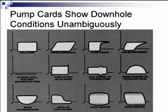If you see a rectangular-looking card, that says the anchor is holding, the pump is filling, the pump is good — more production available. This one says the same things except the tubing anchor has turned loose or was never anchored — you need to anchor the tubing because you're losing some production. And this one here shows you're pounding fluid; the pump is only filling about halfway. The pump is good, the anchor is holding, but you're over-pumping the well — you need to time-clock it or put a pump-off control on it to match the pump capacity to the well capacity.